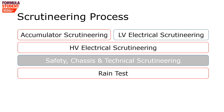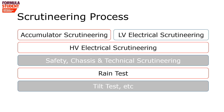We do the rain test after the rest of scrutineering because, for some reason, a lot of scrutineers don't like working on a wet electric car. Once you've passed the rain test, it's off to the tilt test, brake test, etc. A little tip before the tilt test — especially if you're going directly from the rain test — try to make sure any pooled water has come out of the car, because they may well fail you at tilt if water starts pouring out, even if it's just from the rain test and nothing to do with your vehicle.